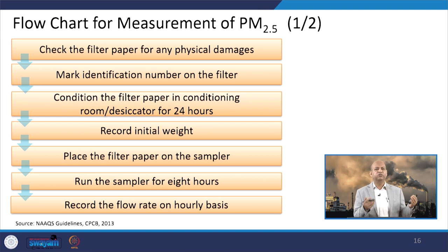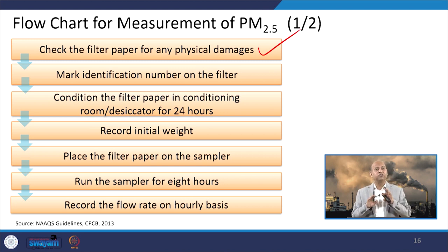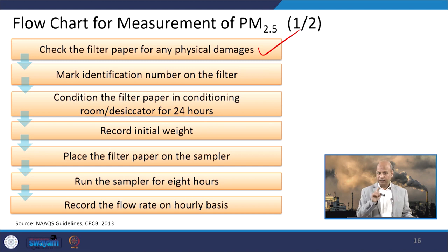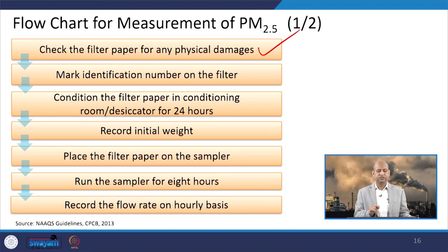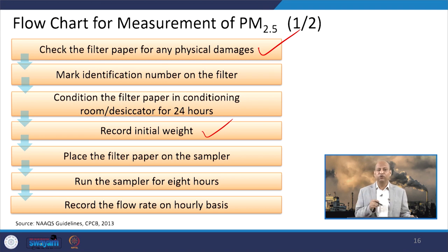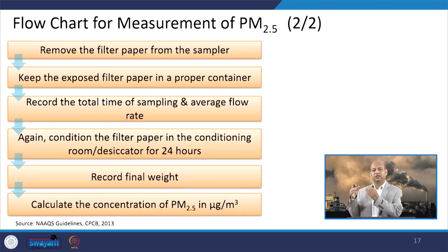In the summary flow chart for PM 2.5 measurement: first, check the filter paper for any physical damage — if damaged, reject it and get a new one. Mark the identification number representing the monitoring site. Condition the filter at a particular temperature for 24 hours to remove moisture and VOC-related issues. Record the initial weight after conditioning. Place the filter paper on the sampler and run it for 8 hours or 4 hours depending on requirements. Record the flow rate on an hourly basis to get an average value.